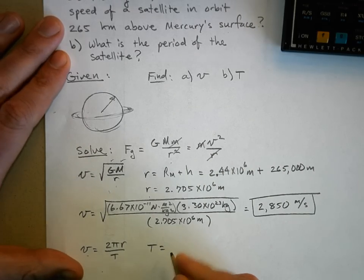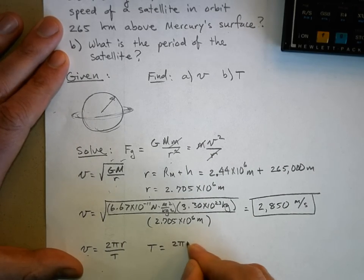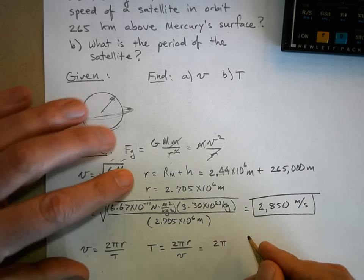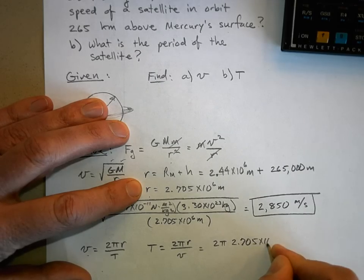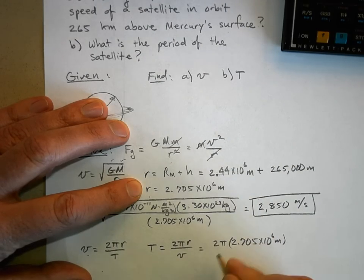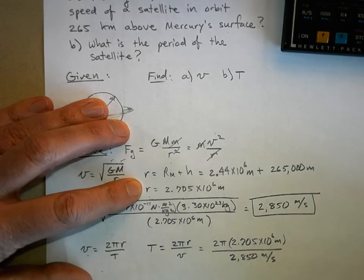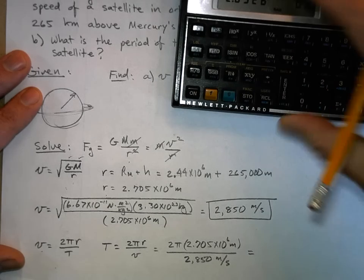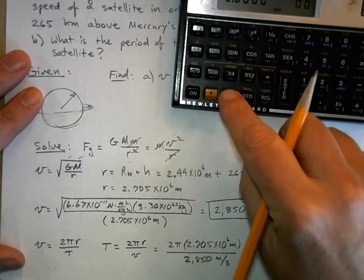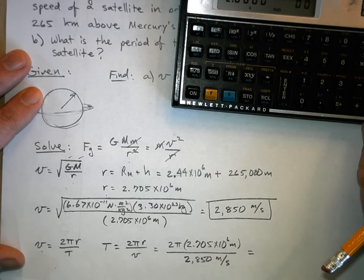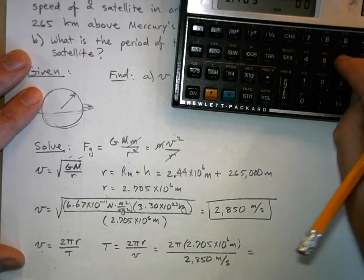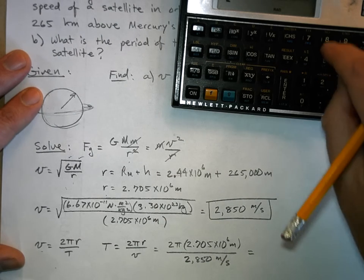So the period is equal to 2 pi r over the speed. That's 2 pi times r, which we got to be 2.705 times 10 to the 6 meters, divided by 2,850 meters per second. And that gives us an orbital period.